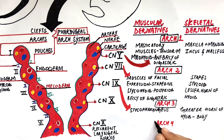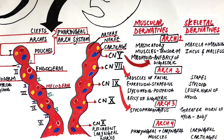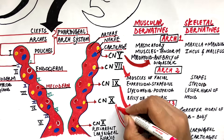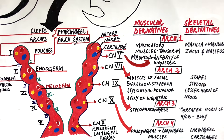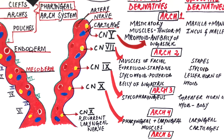The muscular derivatives of the fourth arch will be the pharyngeal and laryngeal muscles, and its cartilaginous derivatives are the laryngeal cartilages. The muscles will be innervated by the nerve of the fourth arch, which is the vagus nerve.